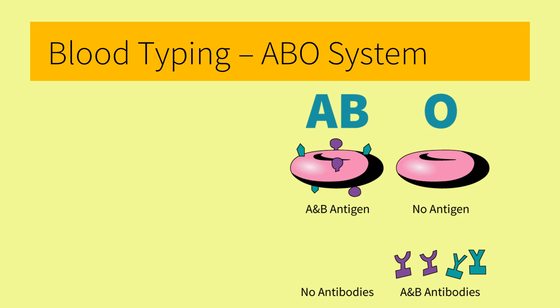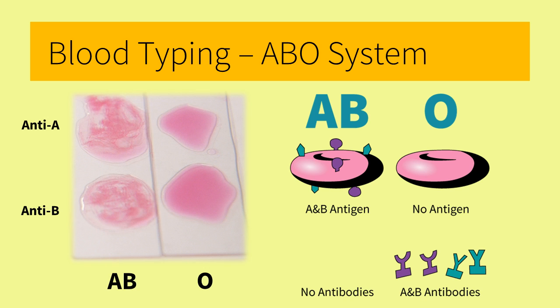Type AB blood has both antigens on its cell surface. So agglutination will occur when both antibodies are present. And since type O possesses no antigens, agglutination will not occur when either antibody is present.